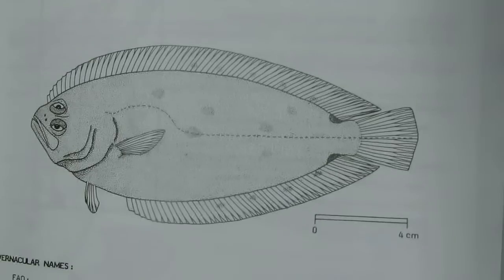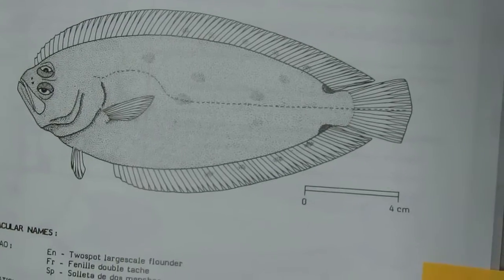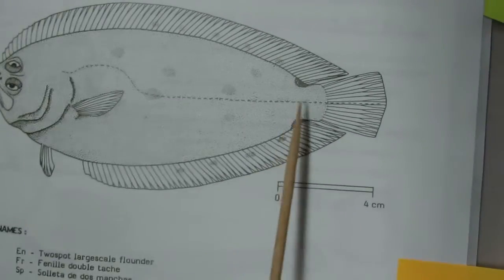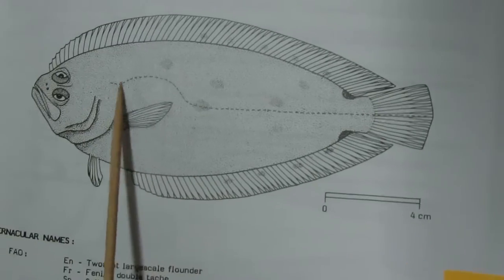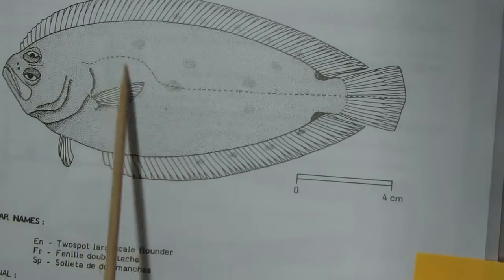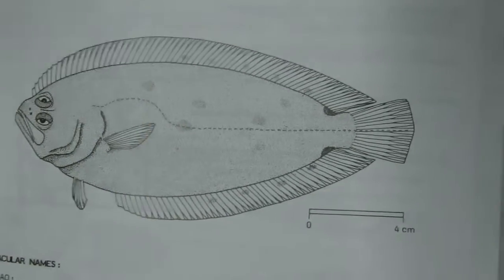Next is Clupeidae. Tubules of the lateral line scale are branched and form a curve above the pectoral fin.